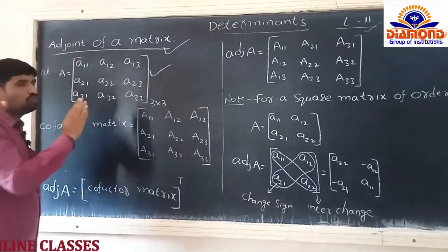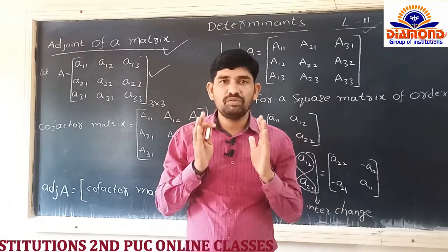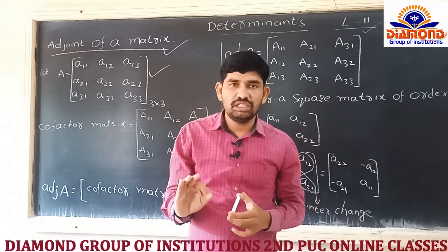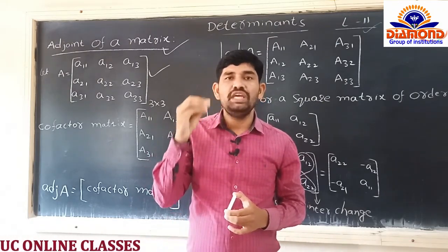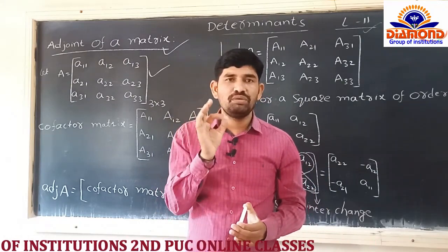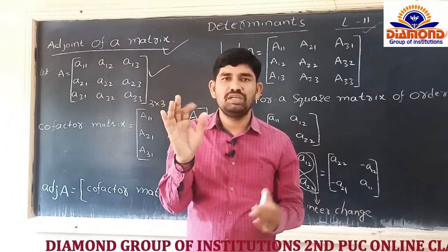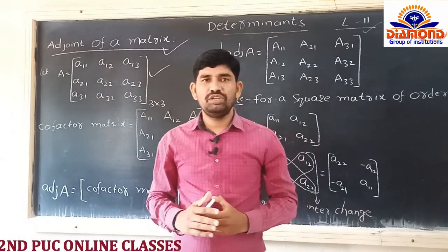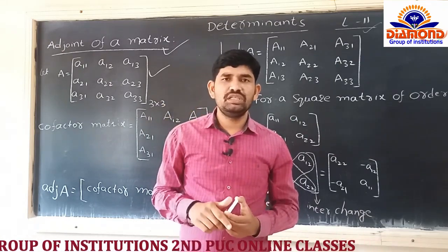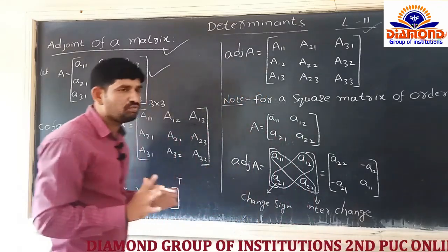To find the Adjoint of matrix A, it is very simple. First, we have to find the cofactors of each and every element in the matrix. Suppose the element is a₁₁ - the cofactor of a₁₁ is written as capital A₁₁. Similarly, the cofactor of a₁₂ is capital A₁₂. In place of small 'a', we write capital 'A' - that is how we indicate the cofactor.